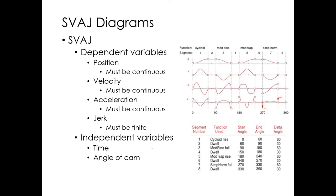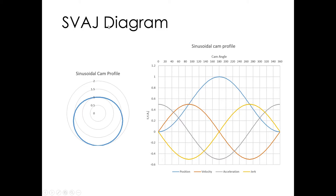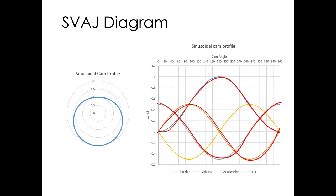On SVAJ diagrams the independent variable is cam angle, related to time by omega times t. We assume constant angular velocity to simplify things. The dependent variables are S, V, A, and J. If you plot a simple harmonic cam over a full cycle without dwells, position, velocity, acceleration, and jerk are all nicely continuous. But if you add a dwell, acceleration becomes discontinuous at the transition — creating a jump — and that causes wear, vibration, and other issues. We'll discuss better cam functions in the next lecture.